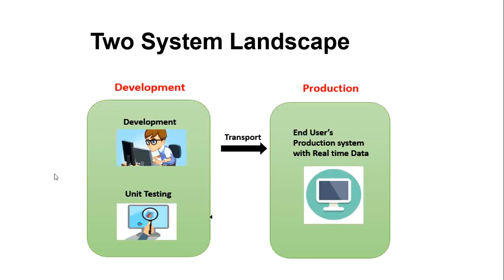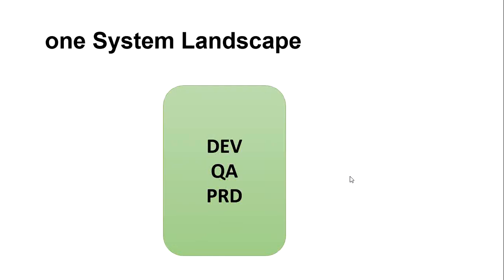The two-system landscape has disadvantages: no significant development testing and training activities can occur at the same time, and when development and QA are combined in one system, only few modifications can be carried out. So SAP prefers the three-system landscape. The one-system landscape, also called single system landscape, combines all systems — quality, development, and PRD — into one. SAP does not recommend this configuration containing all central clients in a single SAP system.